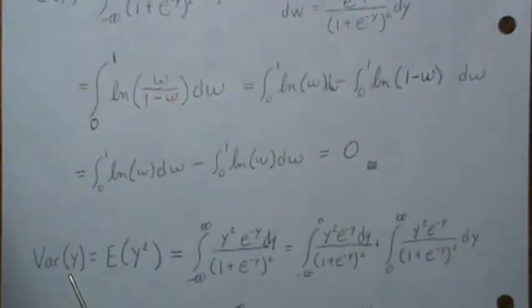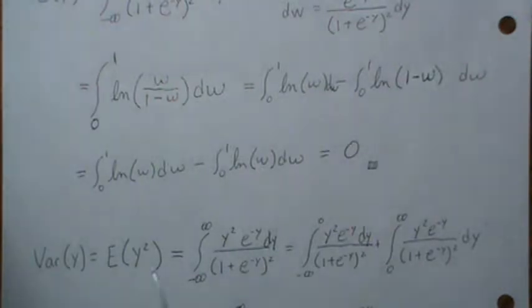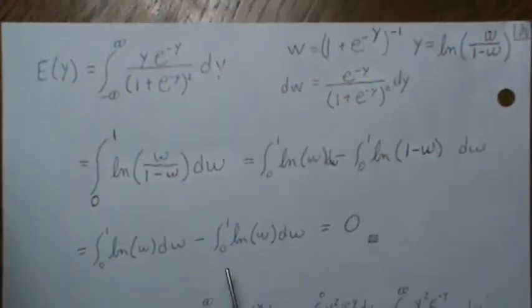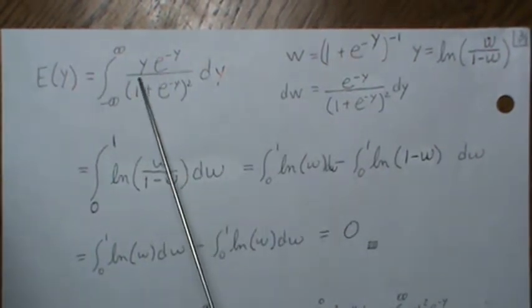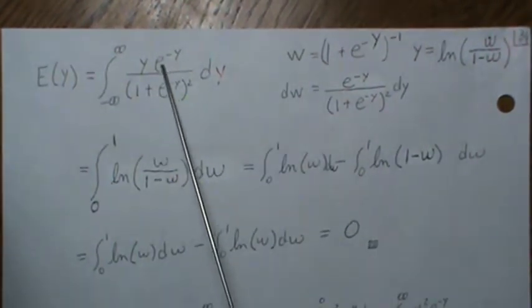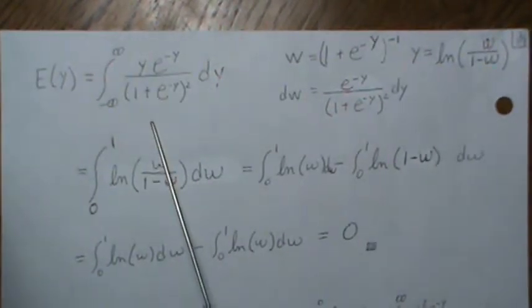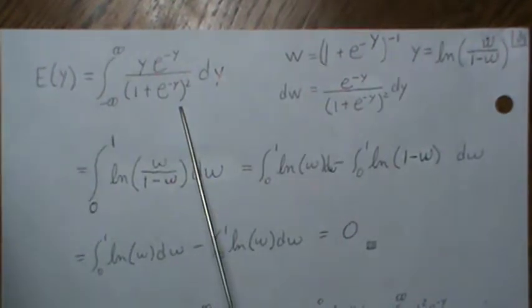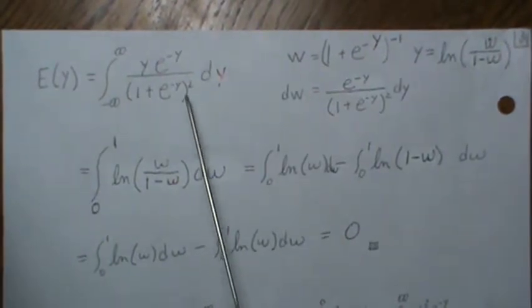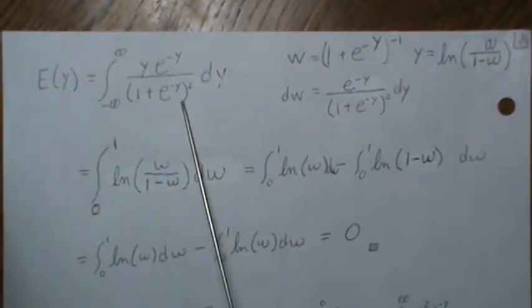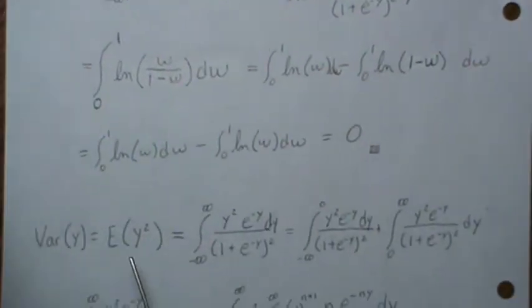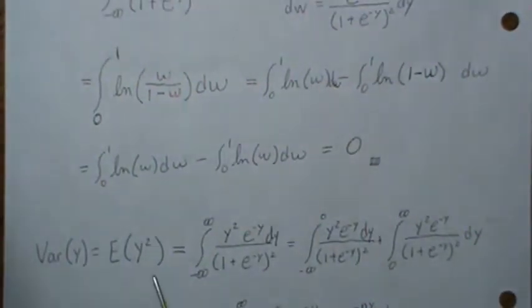Now the variance of Y is expected value of Y² minus the mean squared, but the mean is zero, so it's just this. So you put in y² times this. Before I go too far, another way you could do this is you could know that this is an odd function, and because your limits are symmetric, you know that has to be zero. So you could technically do it in one step right here, but if you didn't realize it was an odd function, then you have to go through this.